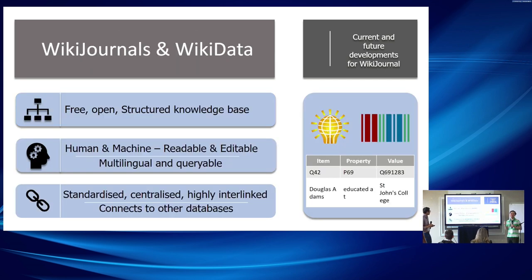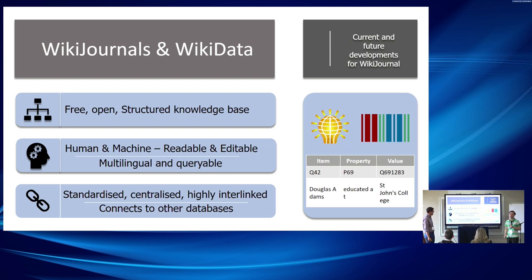We are fully integrated with Wikidata, so authors are all linked — the keywords, review process, submission dates, acceptance or decline dates are all fully integrated onto Wikidata. You could do a query such as finding articles published before a certain year that have more than two peer reviewers.